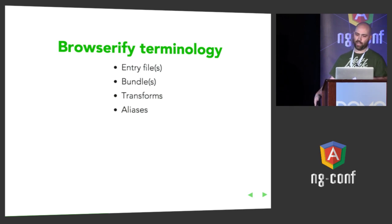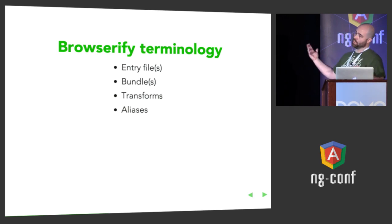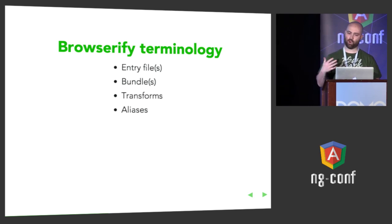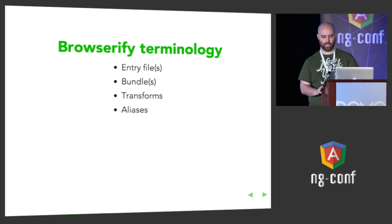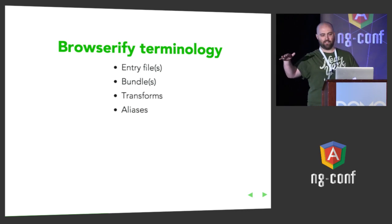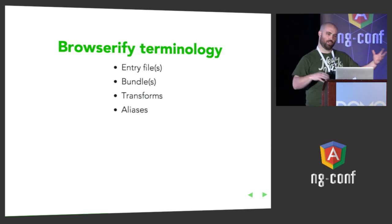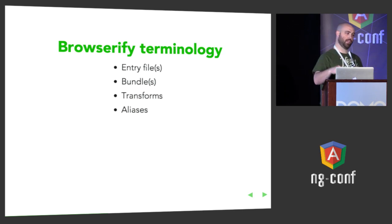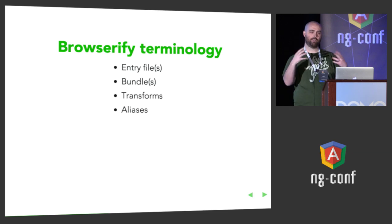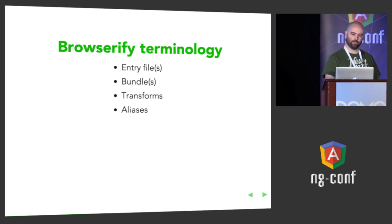There are transforms, which are just what they sound like — source transforms that happen before or as part of the bundling. We're going to get into those a little bit. And then aliases, to let you — if you have a deeply nested file somewhere that you use in a lot of places and want to avoid typing that file path every time — you can give it an alias name and just refer to it by name.